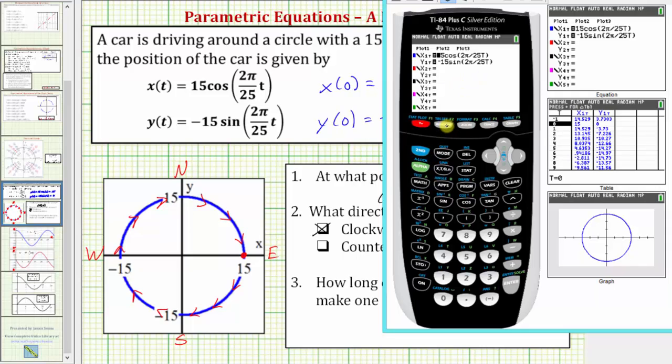But I do want to show you that when I press window, I did start t at t equals zero. So now if we press graph, if I press the trace key and then the right arrow,